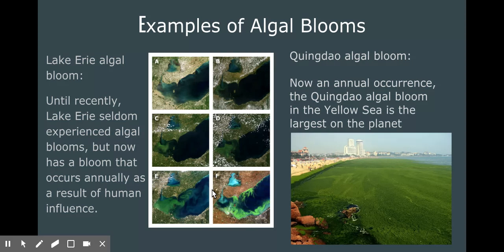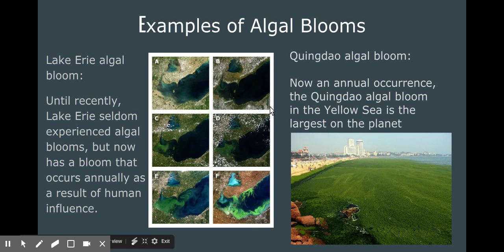Here are two examples of algal blooms that are significant to large populations of people. The first six photos that you see on the left here are aerial views taken from the sky of Lake Erie in the United States. You can see the change in the amount of algae over time as the pictures progress from A to F. The photos show the growth of an algal bloom that residents on Lake Erie now experience each year.